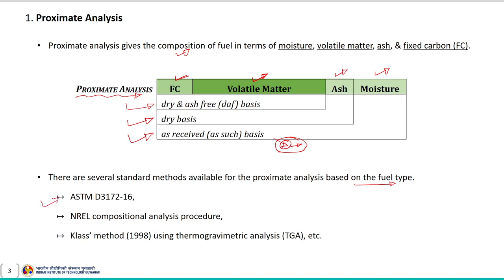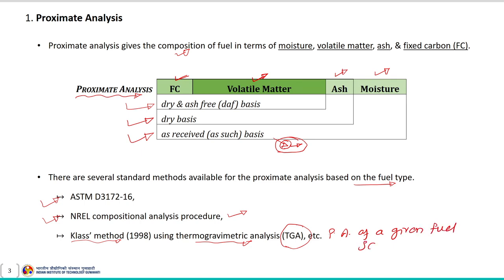There are several standard methods available for proximate analysis, based on the fuel type. The ASTM method is a standard method used for proximate analysis. Apart from that, the NRL compositional analysis procedure is also available, and the newest addition is the class method using thermo-gravimetric analysis, also known as TGA.